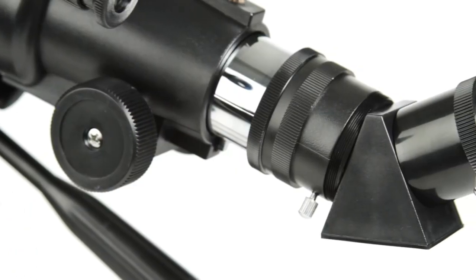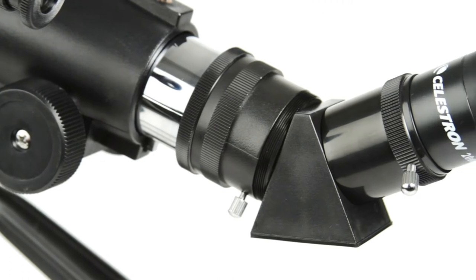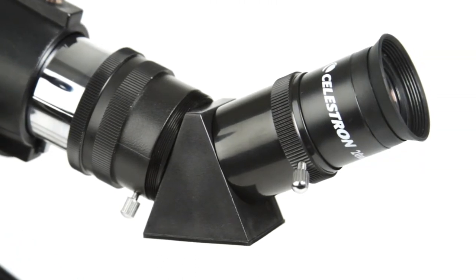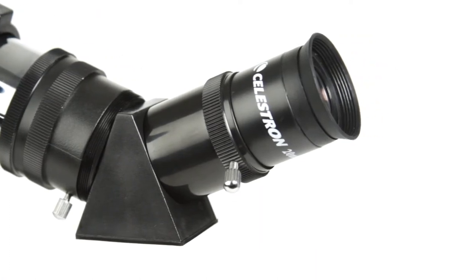An erect image diagonal corrects the orientation of your images, so you can also use TravelScope for daytime observations of wildlife, birds, and more.